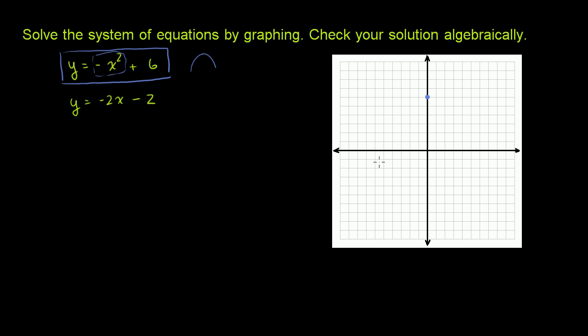And then if we want, we can graph a couple of other points just to see what happens. So let me draw a little table here. When x equals 2, what is y? Negative x squared plus 6. So when x is 2, you have 2 squared, which is 4, but you have negative 2 squared. So it's negative 4 plus 6, which equals 2. And the same thing when x is negative 2. Because you put negative 2 there, you square it, then you have positive 4, but you have a negative there. So it's negative 4 plus 6 is 2.